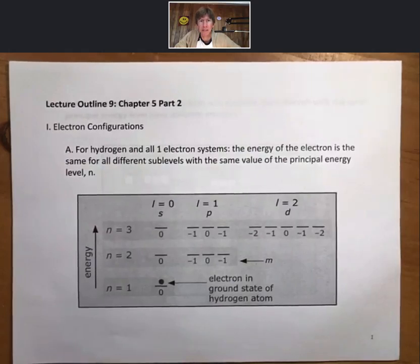This is Lecture Outline 9, which is Chapter 5, Part 2. We're going to now talk about electron configurations, now that we know what orbitals look like. And we're going to start with hydrogen and one-electron systems.